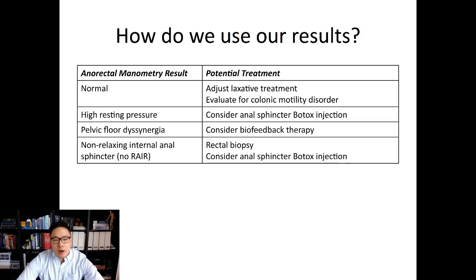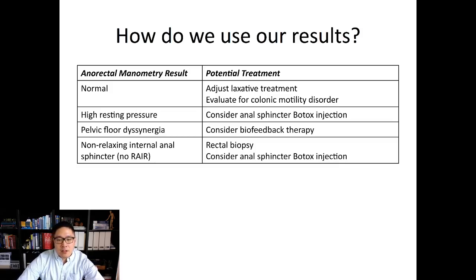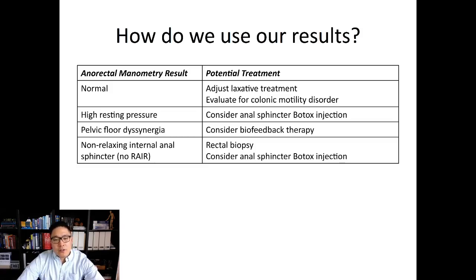If there is no RAIR — meaning the internal anal sphincter does not relax — we worry about Hirschsprung's disease and want to get a rectal biopsy. But regardless of whether they have Hirschsprung's or internal anal sphincter achalasia, anal sphincter Botox injection could be considered.